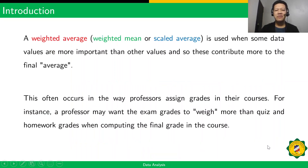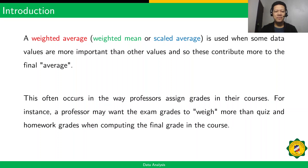A weighted average, or weighted mean, or scaled average, is used when some data values are more important than others, so these contribute more to the final average. This often occurs in the way professors assign grades in their courses. For instance, a professor may want exam grades to weigh more than quiz and homework grades when computing the final grade.